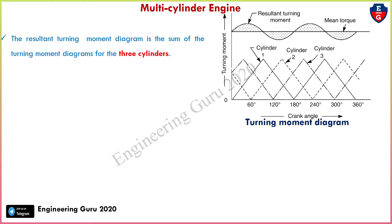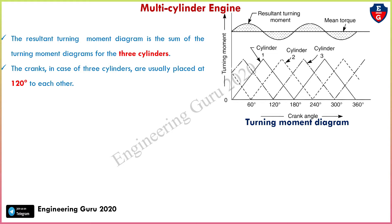In a multi-cylinder engine we have three cylinders. In the case of a three-cylinder engine, the cranks are usually placed at 120 degrees to each other — each cylinder is at 120 degrees to each other. It may be noted that the first cylinder is the high-pressure cylinder.